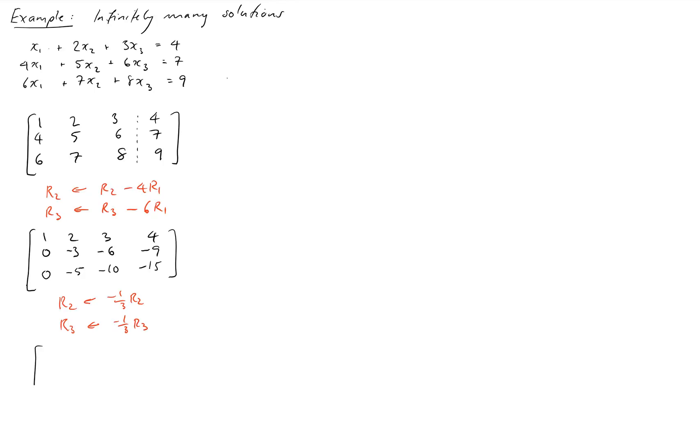So 1, 2, 3, 4, 0, 1, 2, 3, and then 0, 1, 2, 3 again. Sorry, that row operation should be negative 1 fifth, not negative 1 third. Just note that.